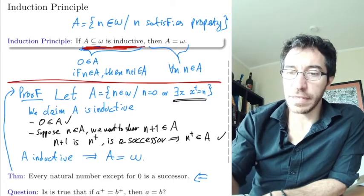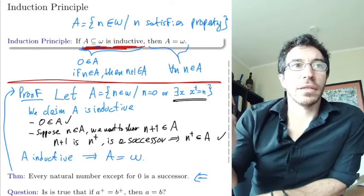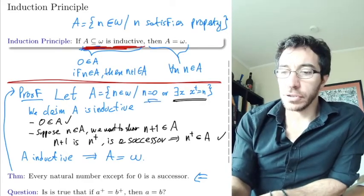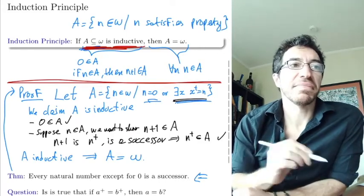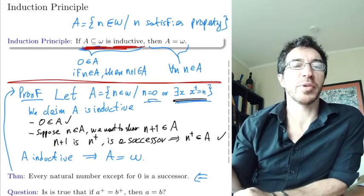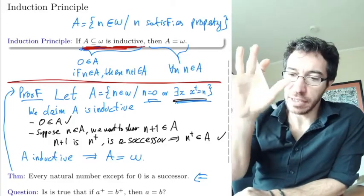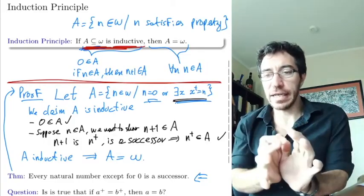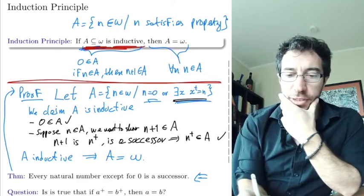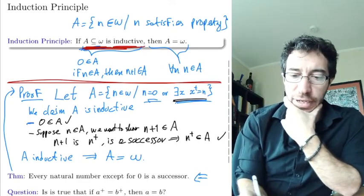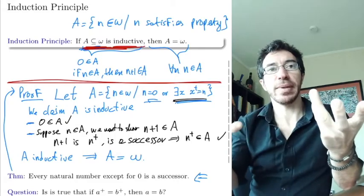Since A is inductive, by the induction principle A is everything — so that means everything in omega is either zero or is a successor. That's a very simple proof of how you prove something by induction. You define the set A of all things that satisfy the property, then prove two things: that zero belongs to it, and that if something belongs to it then its successor also belongs to it.